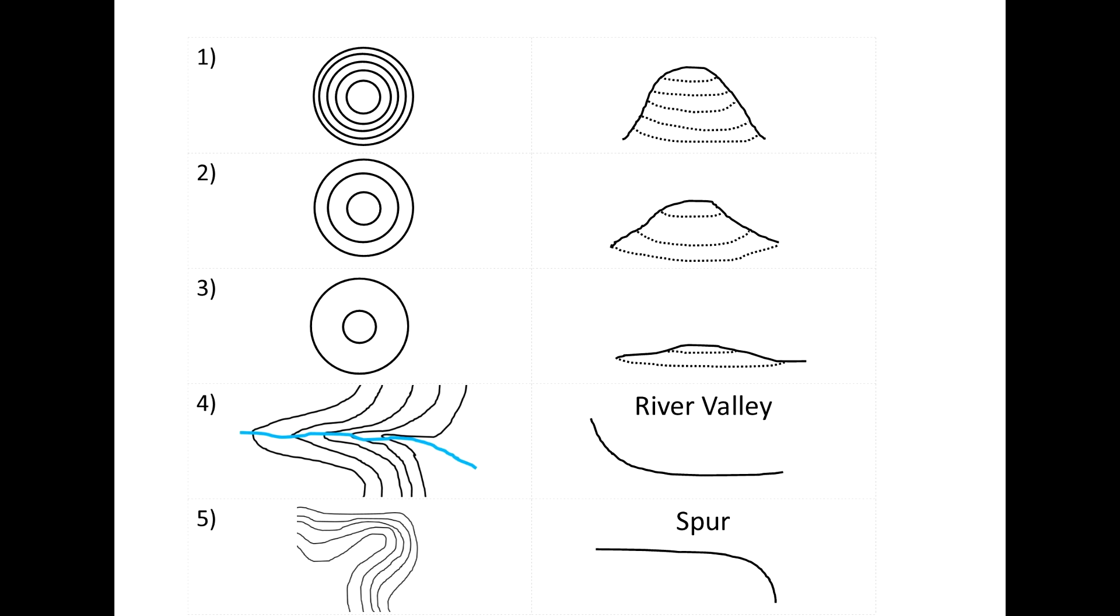Then we've got a couple of other common features you're going to see on an ordinance survey map. Number 4 shows a river valley. So in this example, it's decreasing in height from the west to the east. We start off at high elevation on the west side of this valley, and then it decreases, and the river flows down that valley towards the east.